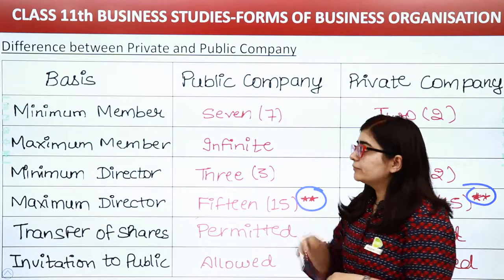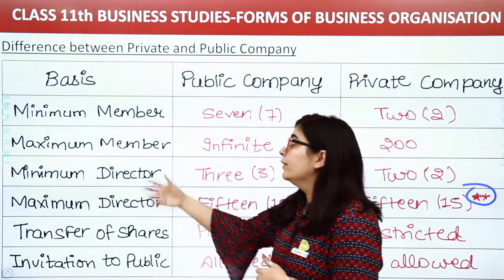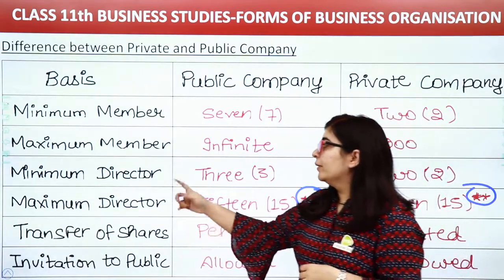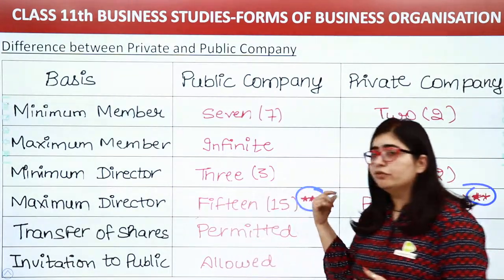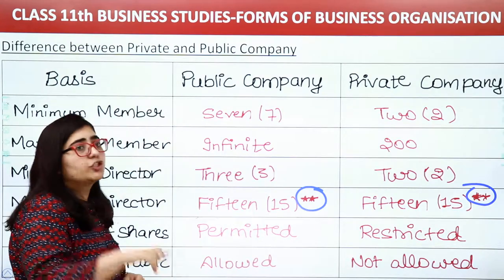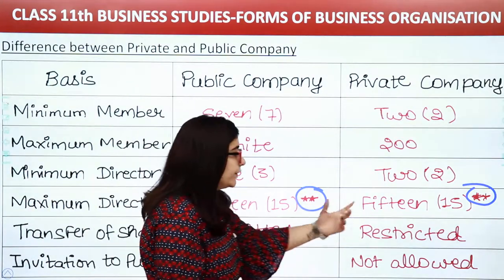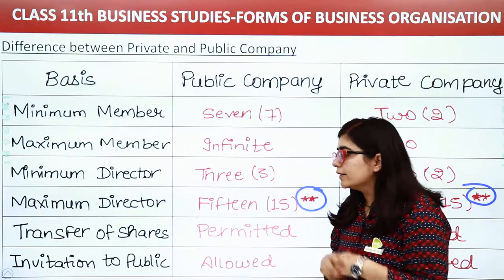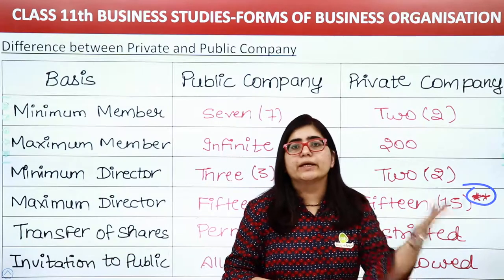Let's revise: minimum members — public is 7, private is 2. Maximum members — public is unlimited, private is capped at 200. Minimum directors — public is 3, private is 2. Maximum directors — both are 15, but can be increased with a special resolution passed at a general meeting of shareholders. Transfer of shares — permitted in public, restricted in private. Invitation to the public — allowed in public, not allowed in private.